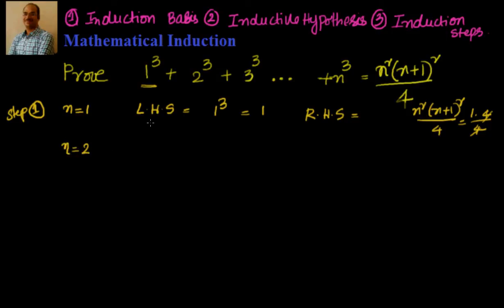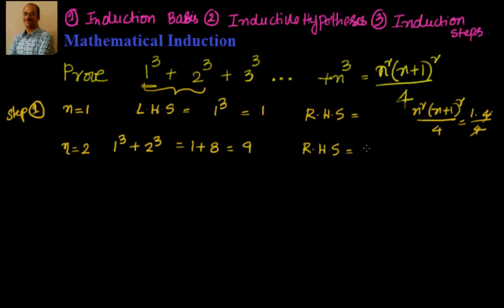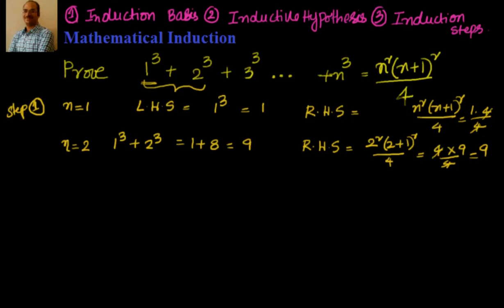Let's also check n=2. On the LHS I have 1³ + 2³ = 1 + 8 = 9. On the RHS, n²(n+1)²/4 at n=2 gives 2² × 3² / 4 = 4 × 9 / 4 = 9. So LHS equals RHS. We have proven the induction basis is perfectly fine, working for n=1.